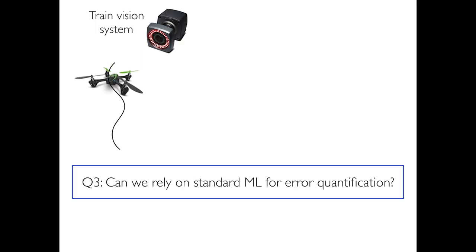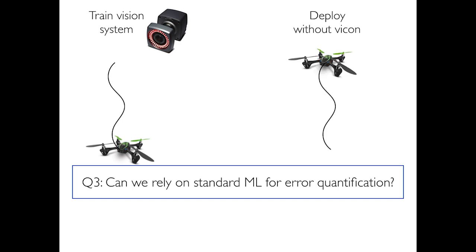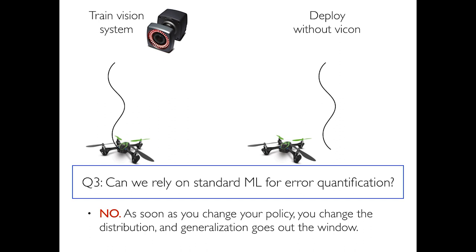If you train a robotic policy using your vision system and then deploy without the vision, you're using a different policy. Work by Chelsea Finn, Sergey Levine, Pieter Abbeel, and Trevor Darrell — what they call guided policy search — trains an optimal controller first using knowledge of where everything is, then turns that off and just uses the camera. That is deploying a policy different from what you used when collecting the data. The camera is seeing something outside of the original policy, and you have to account for that. Standard generalization doesn't work, and we need something else.